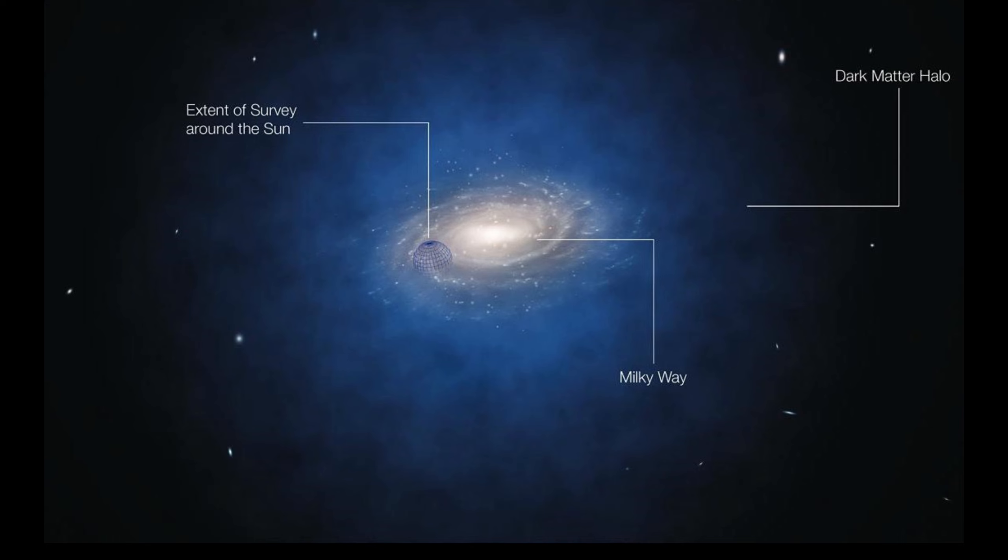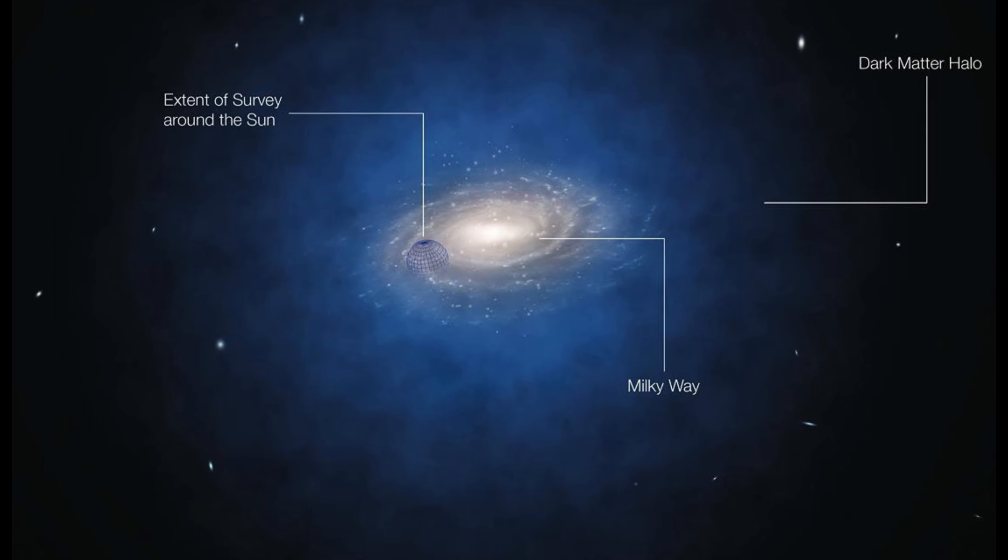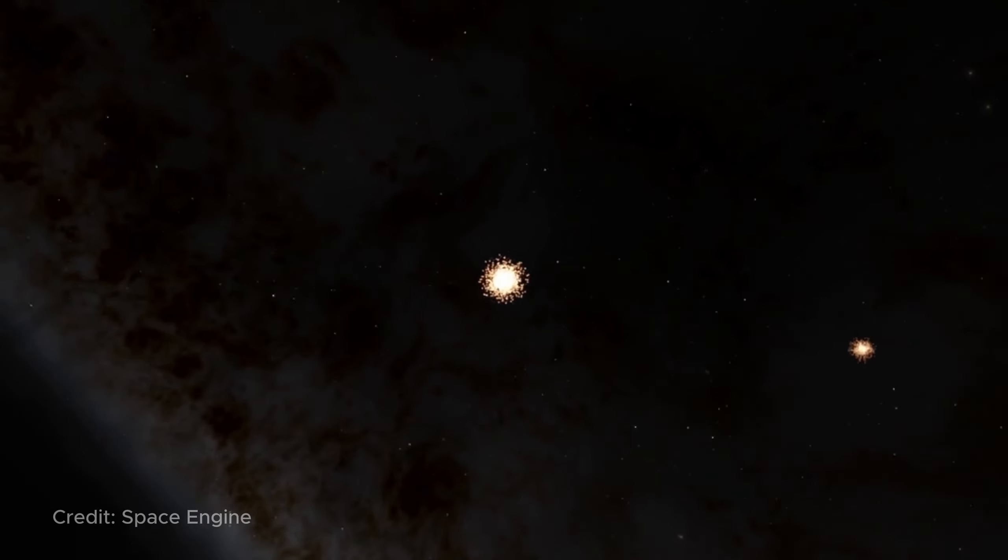Dark matter exists in the form of vast, voluminous, invisible halos surrounding galaxies, including our Milky Way, and everything seems insignificant until we start talking about numbers.